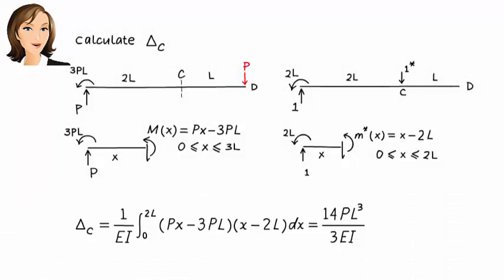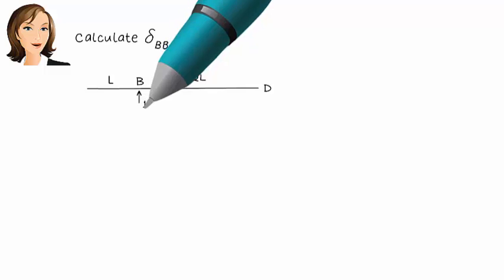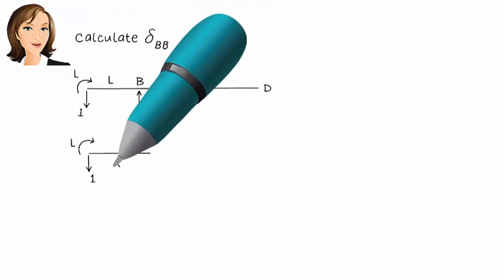We have four more displacements to calculate. First, let's determine delta BB. This is vertical displacement at B due to a vertical unit load applied at B.